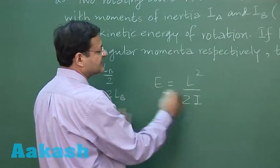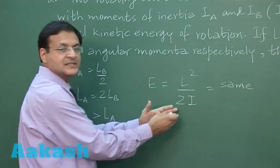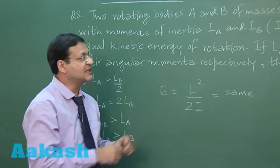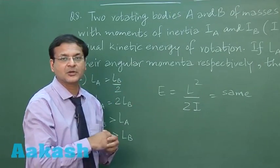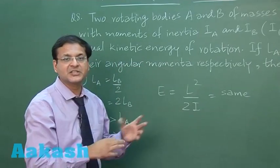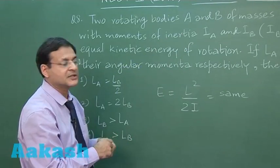Now you have to see that if this is same, then if the moment of inertia is large, then naturally angular momentum will also be large. Here I cannot use the relation of mass because nothing has been mentioned about the bodies. So that mass relation is not relevant here - what is relevant is the relation of moment of inertia.